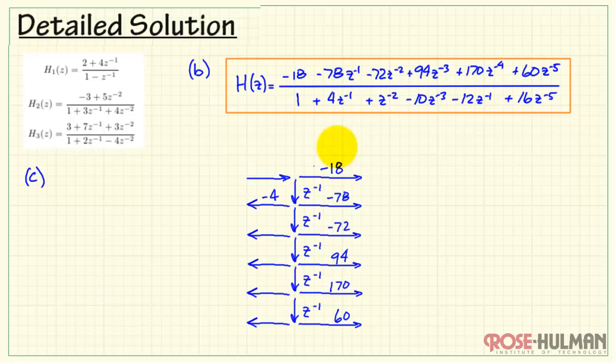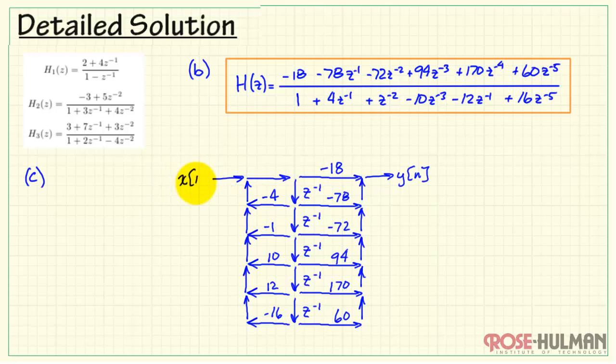This would be minus 4. We need to remember to change the sign on each one of these as we label the coefficients on the arrows. And then we would have 12 and minus 16. Let's go ahead and sum all of these together on both sides. Form the output and then add the input. That's the result we need for part c.